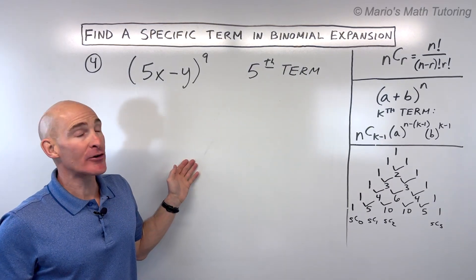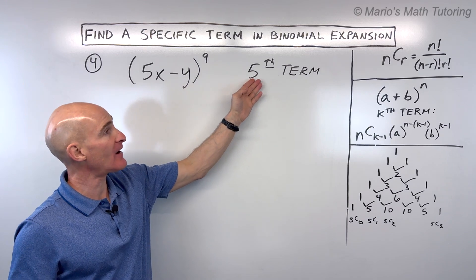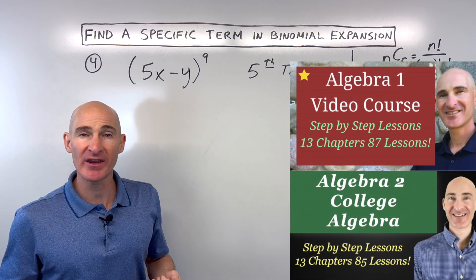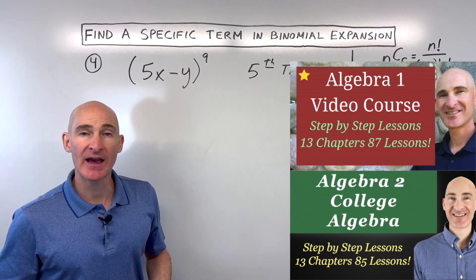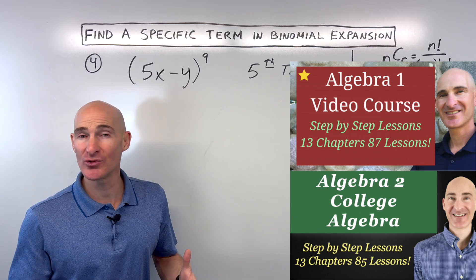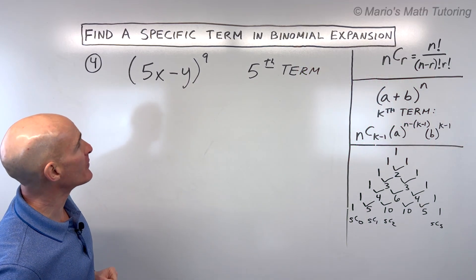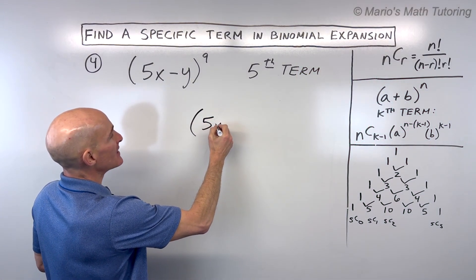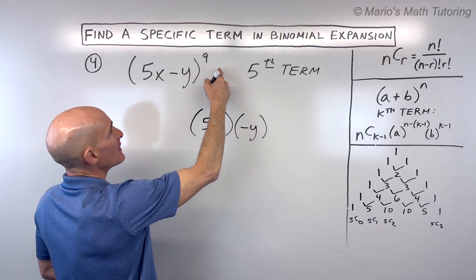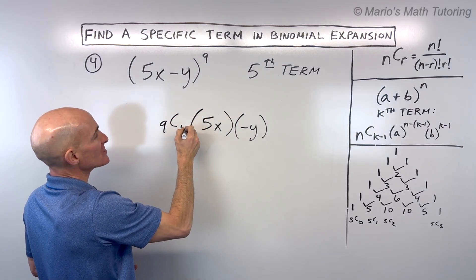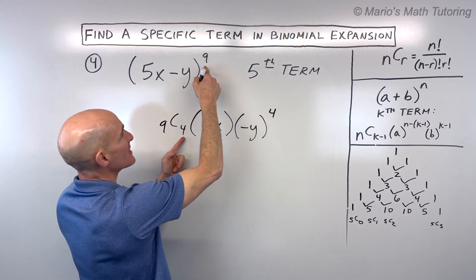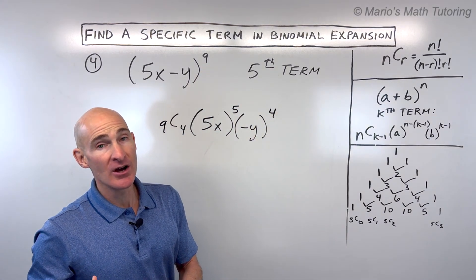Last example: (5x minus y) to the ninth power — find the fifth term. Write the first term 5x and the second term negative y, remembering to capture the negative. For the fifth term on the ninth row, it's always one less: 9C4. The second term's exponent and r match at 4, and the two exponents add to 9: nine minus four is five.